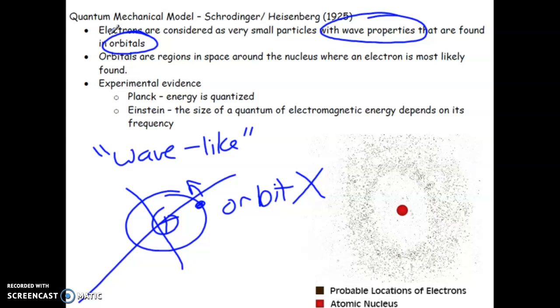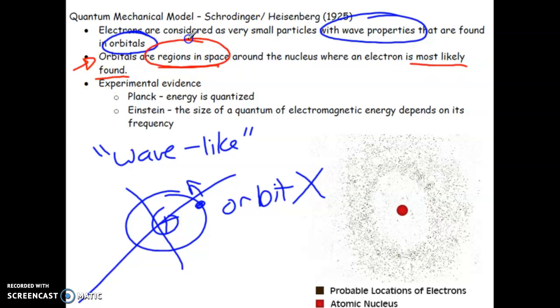Instead, it's called an orbital, or sometimes referred to as an electron cloud. Orbitals are regions of space around the nucleus where an electron is most likely to be found. The space around the nucleus is still mostly empty space, and the electron moves around in a wave-like pattern in a certain area of space — kind of like bees around a hive rather than a train on a track.